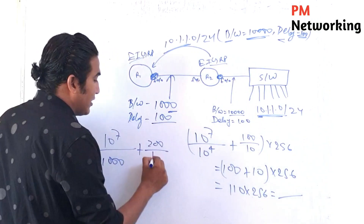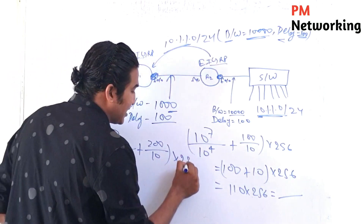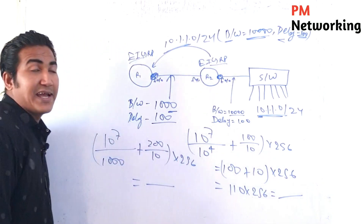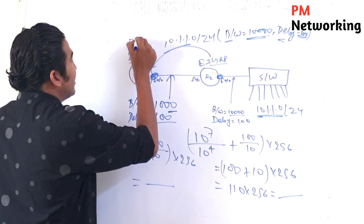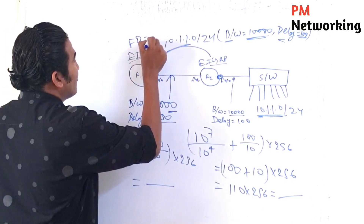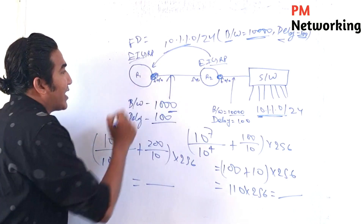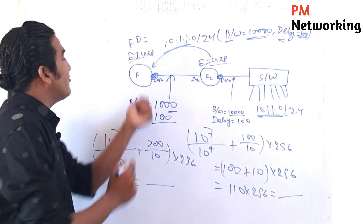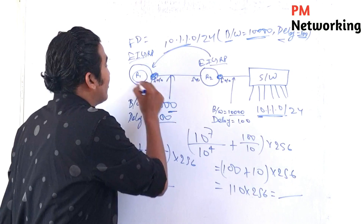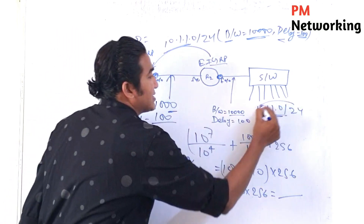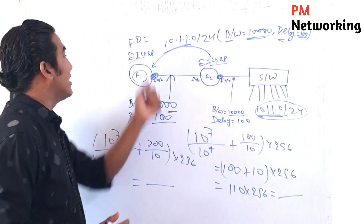So the formula becomes: 10 to the power 7 divided by 1,000, plus 200 divided by 10, multiplied by 256. Whatever value you get will become the FD for R1 to reach this network — that becomes the metric from R1.